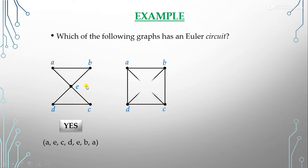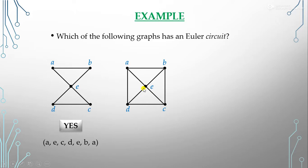Next, suppose our graph has five vertices a, b, c, d, and e in a different configuration. We cannot find any path that covers all edges without repeating any edge, so this does not form an Euler circuit.